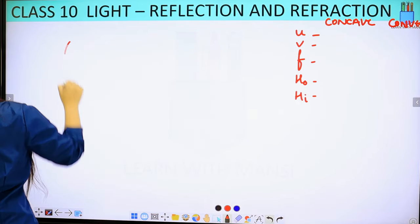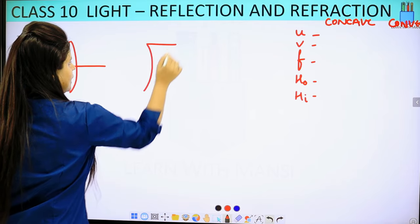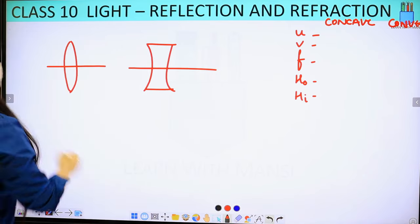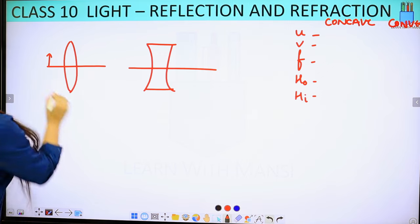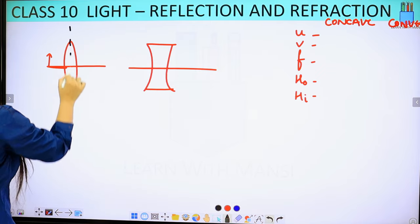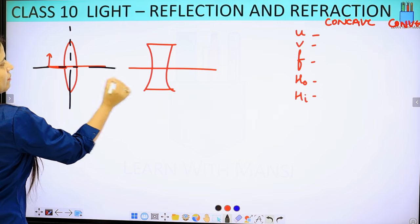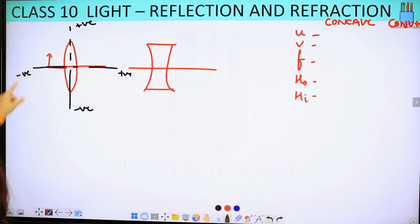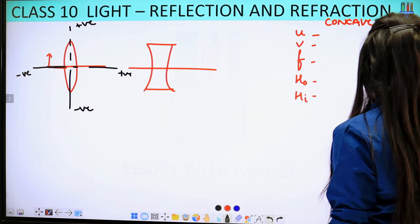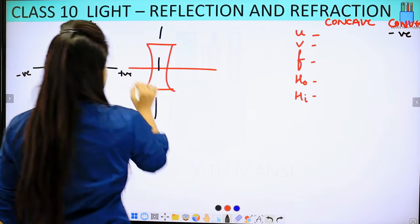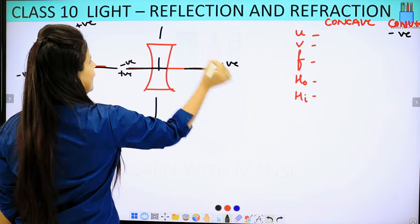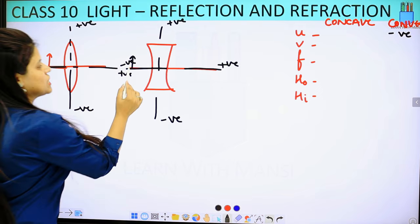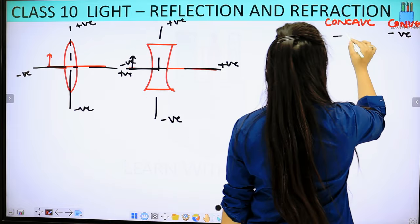Let's make a rough diagram here. This is my convex lens and this is my concave lens. First, when we talk about u, we mean our object distance. In both cases we place the object on the left. We draw a Cartesian plane: the right side is positive, the left side is negative, upper is positive, lower is negative. The object is placed on the left side, so when we measure the object distance, it will be negative. So in both cases, u is negative.